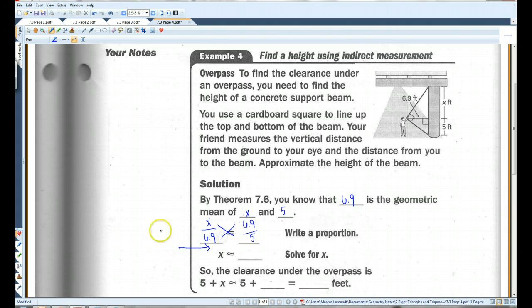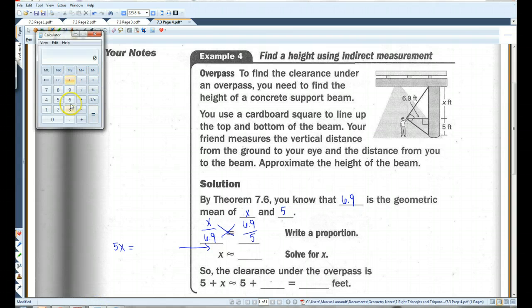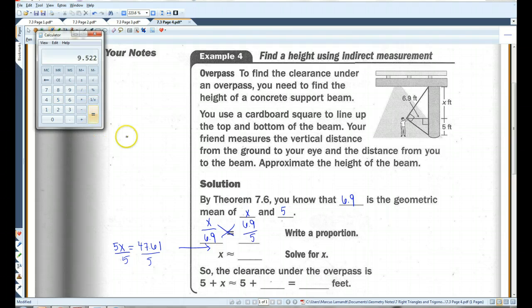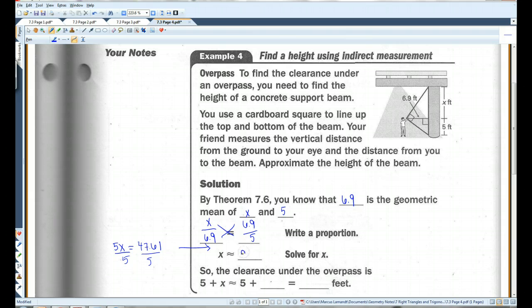X over 6.9 equals 6.9 over 5. Let's cross-multiply. We've got 5X equals 6.9 times 6.9. Let's pull out the calculator. 6.9 times 6.9. 47.61. If you divide both sides by 5. 9.522. I'm just going to leave it as 9.5. The clearance under the overpass is 5 plus X, because remember, you're looking for the whole thing. This is 5. X is 9.5. So the whole thing is going to be 14.5, because 5 plus 9.5 is 14.5, and this is in feet.